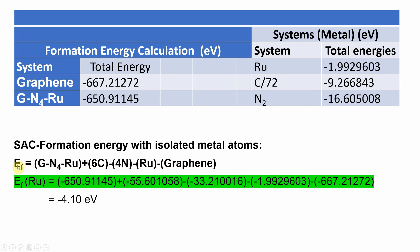Now applying the formula: the total energy of the graphene–N4–Ru system is used. We are using a di-vacancy, replacing two carbon atoms, plus four additional carbon atoms replaced by four nitrogen atoms — totaling six carbon atoms removed. So the energy of six carbon atoms is subtracted. Then four nitrogen atoms are added, so the four nitrogen atom total energy is included. The ruthenium chemical potential (total energy of the single Ru atom) and the pure 6×6 graphene total energy are also applied.